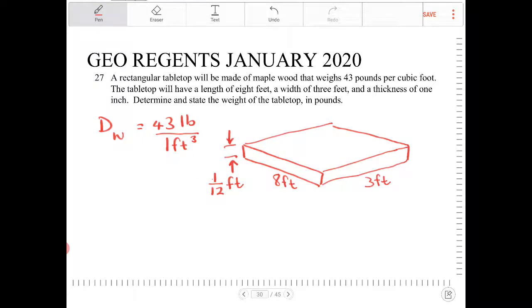So the volume of the tabletop is going to be length times width times height. So 8 times 3 times 1/12. And if you look at this, 3 goes into 12 four times. So I'm going to be left with 8 times 1 fourth. And 4 goes into 8 twice, so it's just going to be 2.